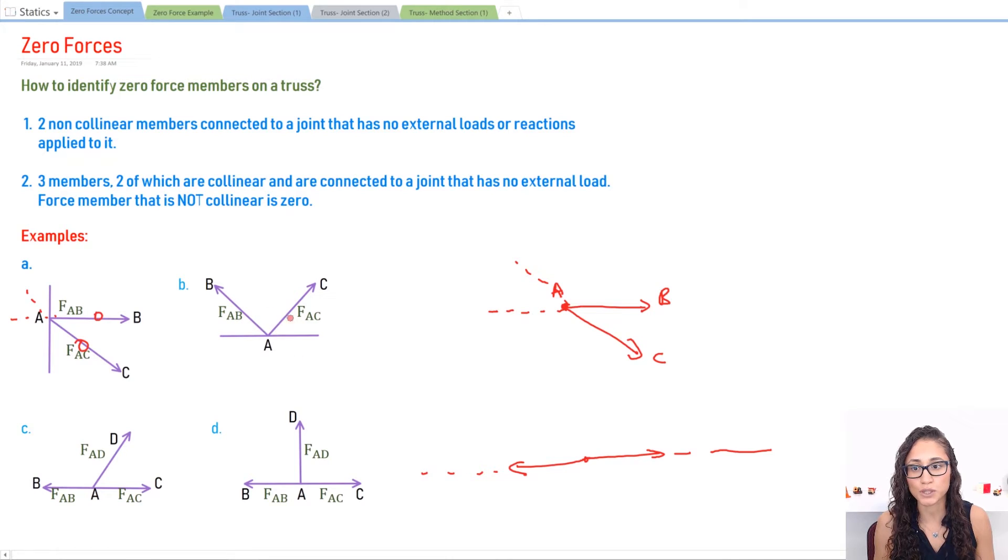Now same thing goes with example B. If we extend BA and we extend AC, they're not on the same line of action, and so force AB and force AC are both going to be zero.